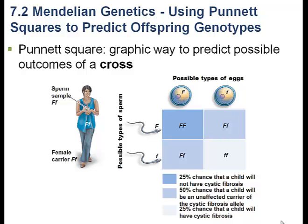An individual can be heterozygous for the disease and not realize they have it. We refer to that state as being a carrier — they have the gene for the disease, but they don't express its traits. A Punnett square allows us to look at the potential consequences if two people who are both heterozygous for cystic fibrosis get together and produce offspring.